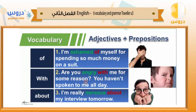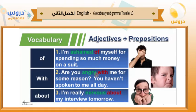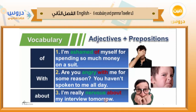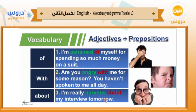'Angry' is the adjective and takes the preposition 'with' — so we say 'angry with me', meaning angry about what I did. Now for 'about': 'I'm really nervous about my interview tomorrow.' 'Nervous' is the adjective and it takes 'about', meaning you're a little worried about your interview tomorrow. Remember, we make a lot of mistakes with adjectives and prepositions in English because we translate directly.